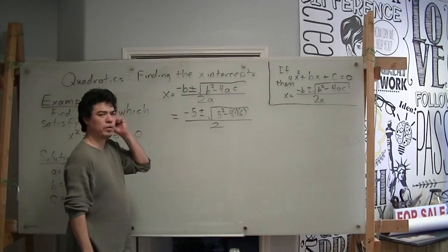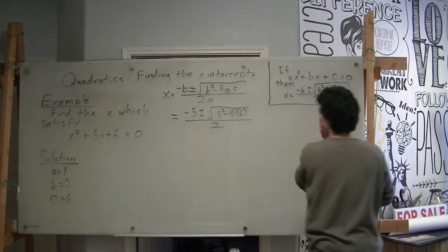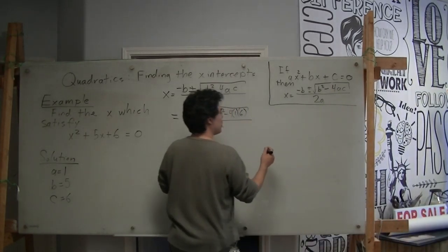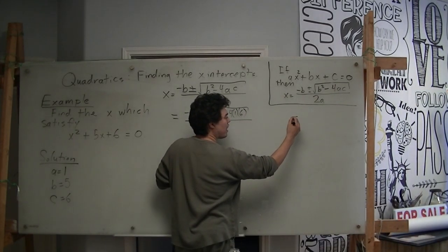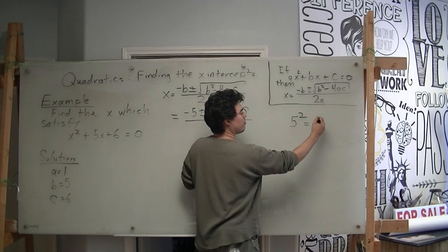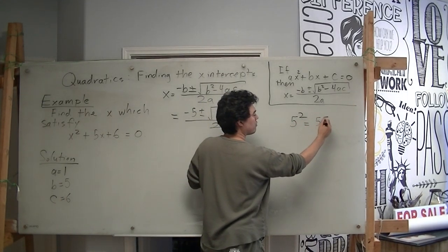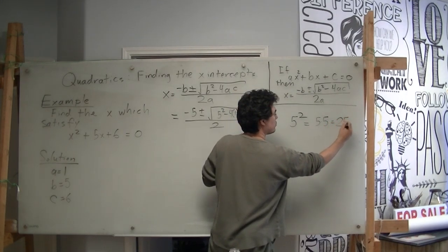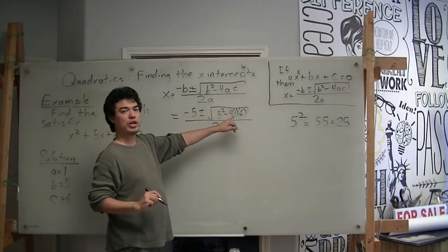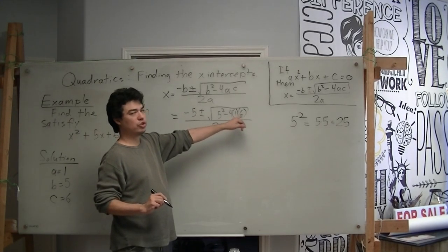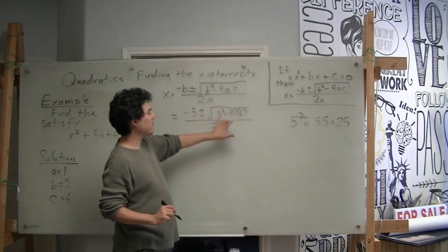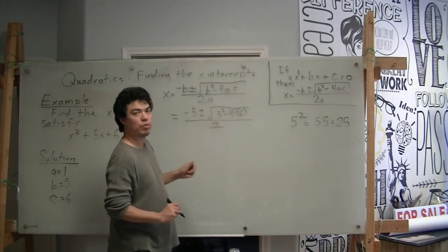So now, just so we remember, what does it mean when we square something? It means that we're multiplying that number by itself. So 5 squared means 5 times 5, which will give us 25. And we know that 4 times 1 is 4 times 6 is 24. So inside this root, we're going to have 25 minus 24, which is going to be 1.